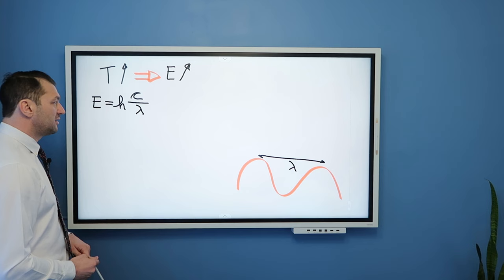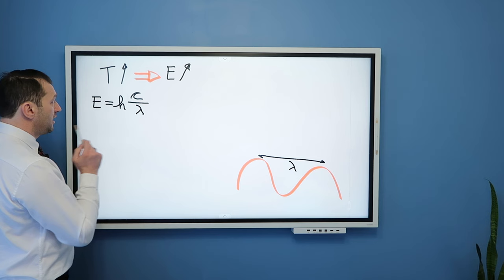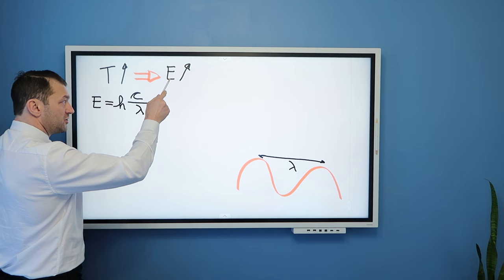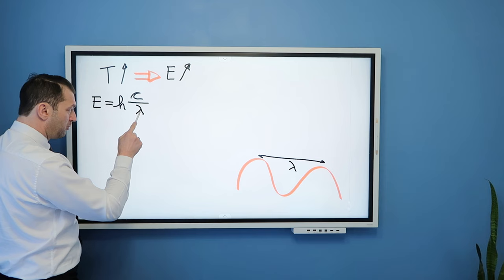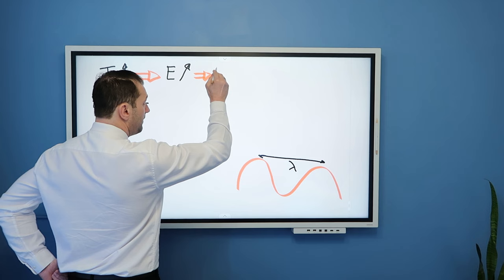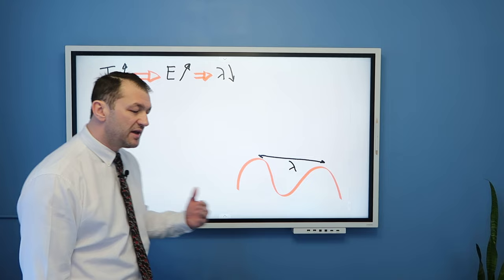So you can see, if we combine these two expressions, you can conclude that when temperature is increasing, electromagnetic energy emitted by the object is increasing. But that energy is inversely proportional to the wavelength, which means that the wavelength of emitted radiation is decreasing as temperature is increasing. Very important.